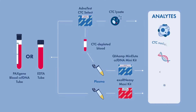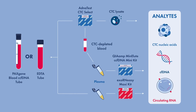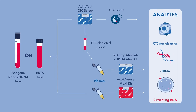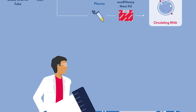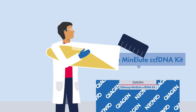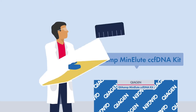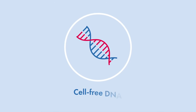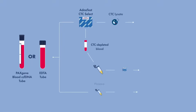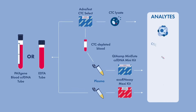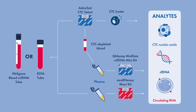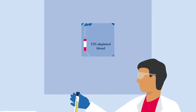Afterwards, the same blood sample depleted of CTCs is used to generate plasma and extract cell-free DNA using the KIA-AMP Minilute CF DNA kit. To complete the picture, circulating RNAs are extracted from the second blood tube using the XORN Easy Kit.